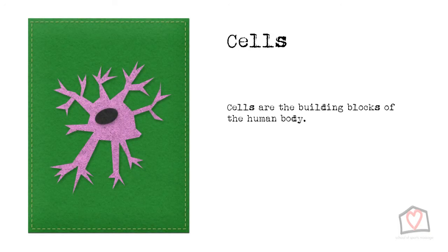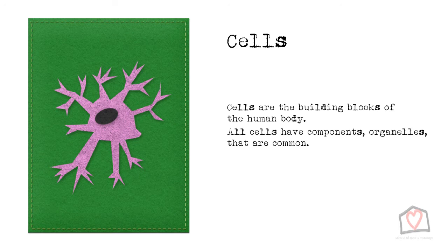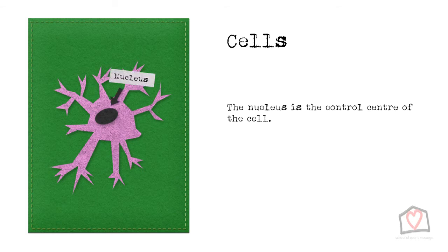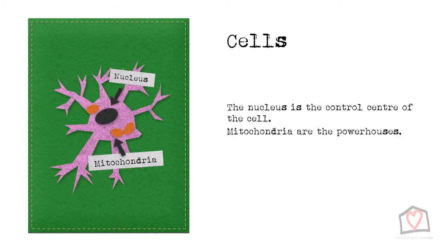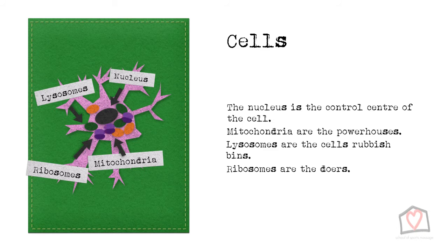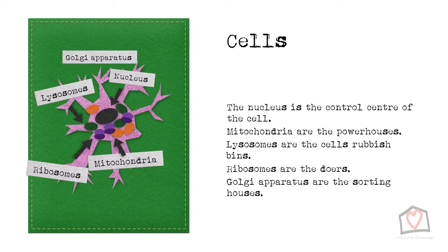Cells are the building blocks of the human body. Every structure in the body is made up of cells adapted to their function, but all these cells have components or organelles that are common. The first is the nucleus — the control centre of the cell. It contains DNA and not only codes for the cell's function but maintains reproduction and cell processes. Mitochondria are the powerhouses; they produce energy internally. Lysosomes are the cell's rubbish bins, removing waste products from within the cell. Ribosomes are the doers — they synthesise proteins for use in growth and repair. Finally, the Golgi apparatus is the sorting house; it organises and creates structures and directs them in and out of the cell.